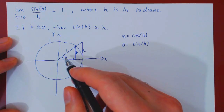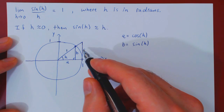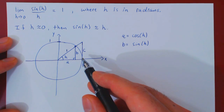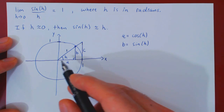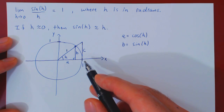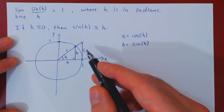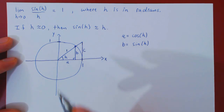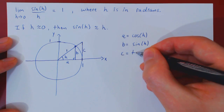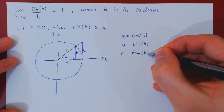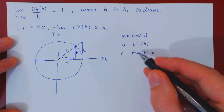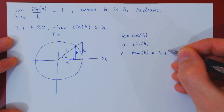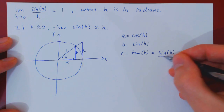Call c the height of the larger triangle. By definition, tangent of h is opposite over adjacent. The adjacent side of the larger right triangle is again the radius of the circle, so it is 1. Therefore tangent of h is c over 1, so c is tangent of h. We can also express tangent in terms of sine and cosine: tan of h is simply sine of h over cosine of h.